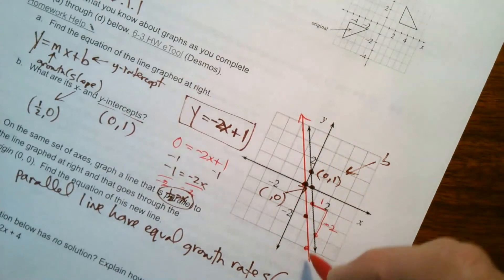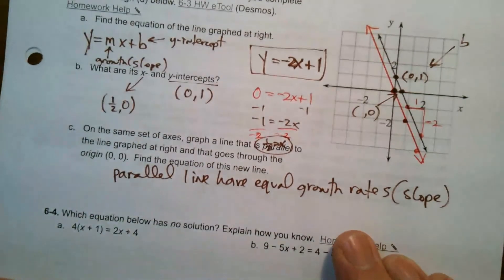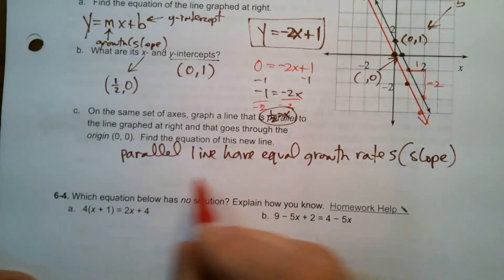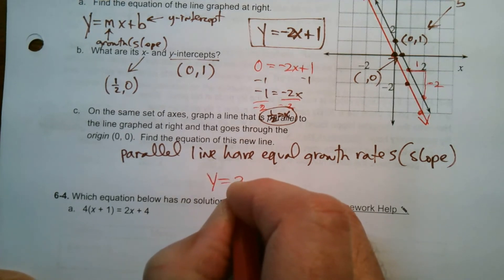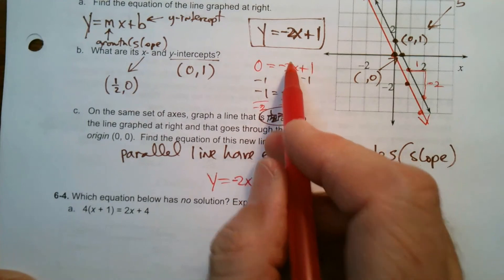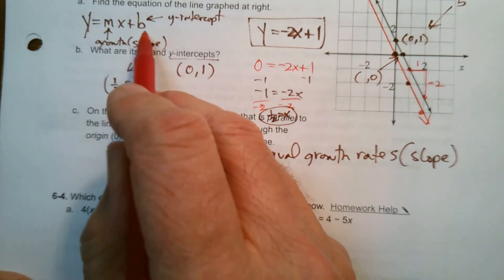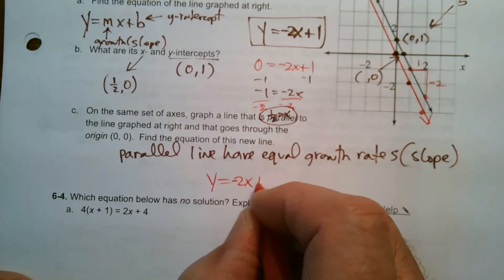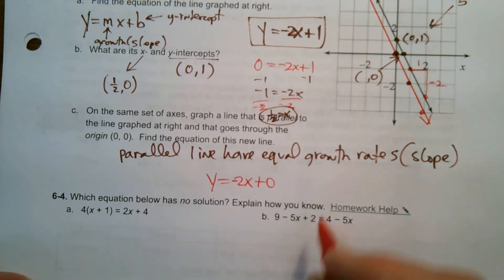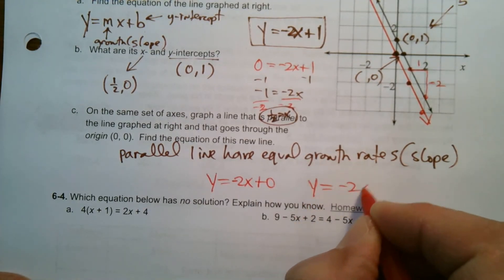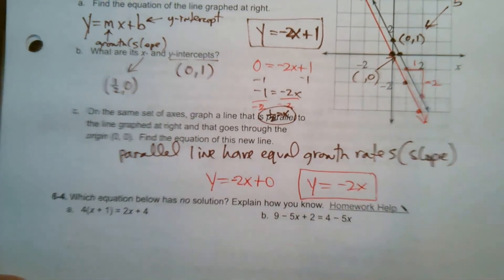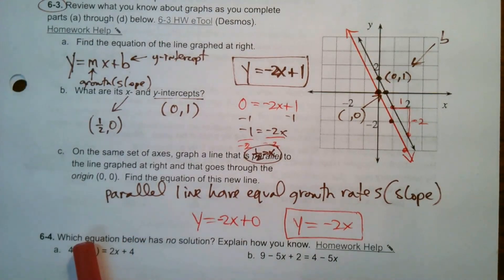So there's that line there, the parallel line that goes through 0, 0. And then it wants the equation. Well, we know the equation is going to be Y is equal to negative 2X because that's the growth. But what is my Y intercept? My B in this case is 0. So you could say plus 0 if you want to, or you can just leave it as Y is equal to negative 2X, either way. Okay. All right. There we go.